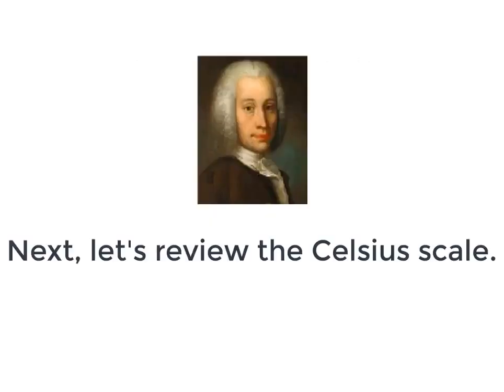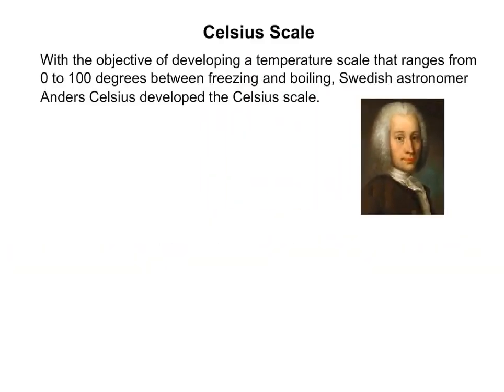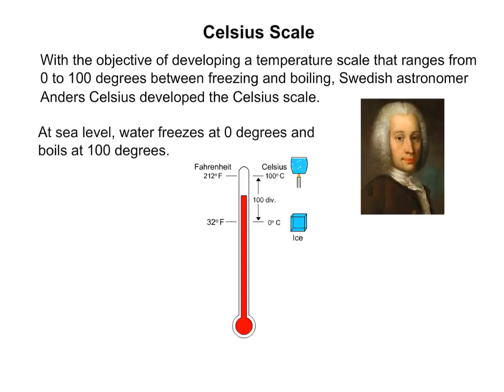Next, let's review the Celsius scale. With the objective of developing a temperature scale that ranges from 0 to 100 degrees between freezing and boiling, Swedish astronomer Anders Celsius developed the Celsius scale. At sea level, water freezes at 0 degrees and boils at 100 degrees.